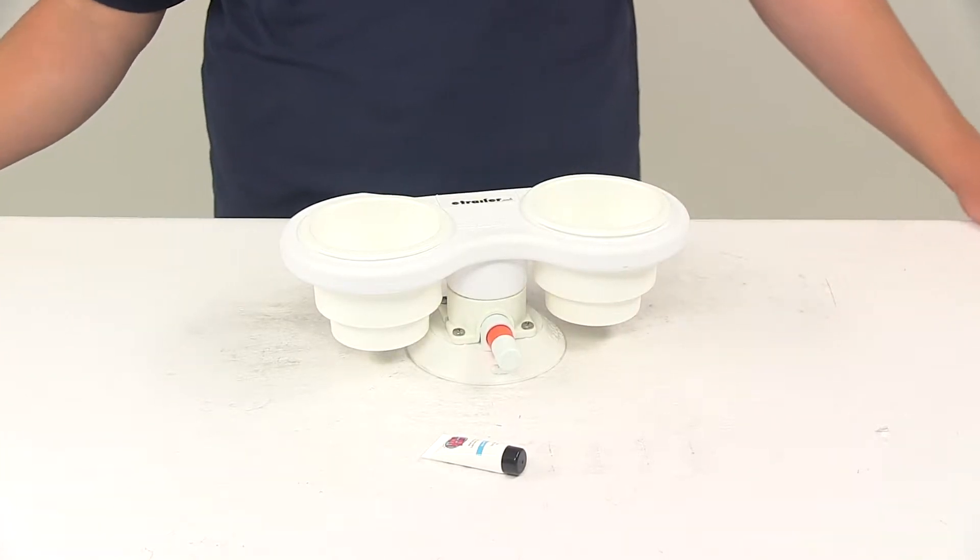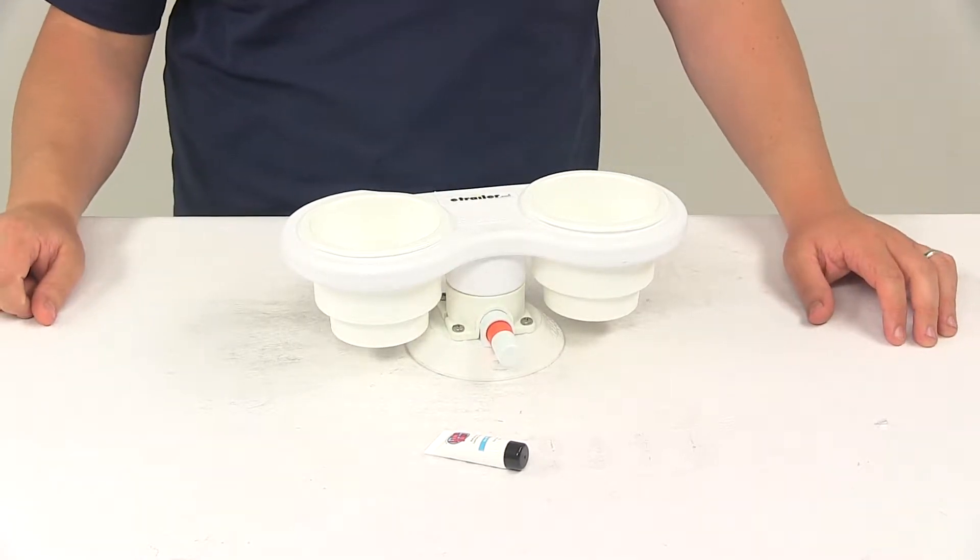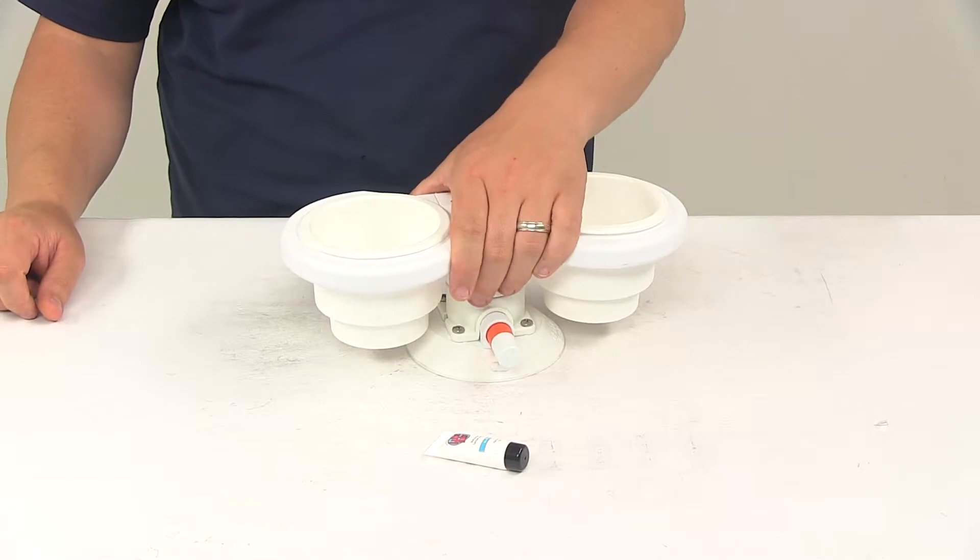Today we're going to be taking a look at the SeaSucker cup holder. This horizontal mount two-cup holder is the perfect addition for your boat. It easily attaches to your console or tabletop.